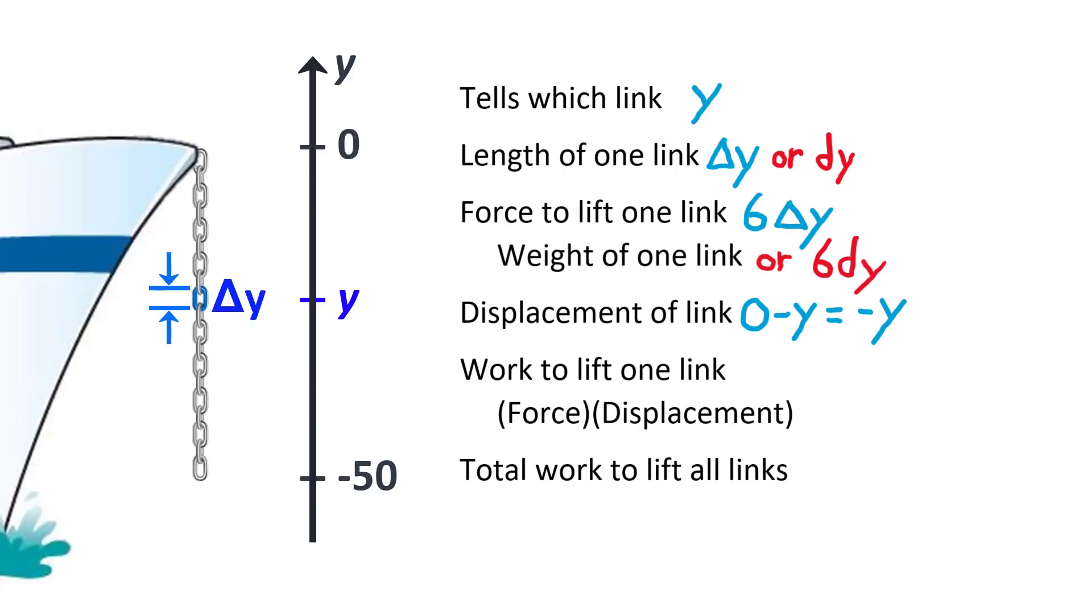Now we have all the parts we need to assemble our integral. The work to lift the link is force times displacement. For a piece of chain with finite length, this is 6 delta y times the opposite of y. We can neaten this a bit by pulling the negative sign out to the front and writing the delta y last. When we consider the limit as the length of a very short piece of chain approaches zero, we use dy instead of delta y.